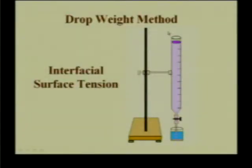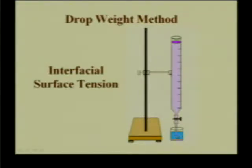What is the experiment and how to do it? As in the previous experiment, the procedure is the same. You form the drop inside a liquid that is inside kerosene. This is the experimental setup: you take the heavier liquid in the burette and lighter liquid in the beaker, and you form the drop inside the liquid, inside the kerosene.